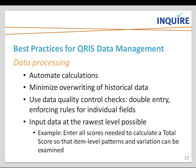For QRIS, the best practice of inputting data at the rawest level would be to enter data at the item level so that data can be examined for any sort of pattern. Building off our previous example around observation data, having observation data at the finest grain level possible allows for determining whether there's something more specific than an indicator or a domain — something like an item — that can be connected with quality.